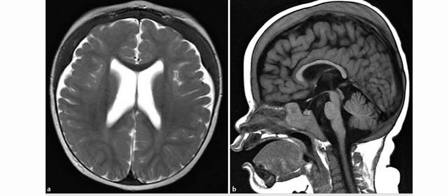Considering this key finding of diffuse calvarial thickening in a child, the diagnosis of chronic anemia should be made. Differentials include chronic anemias, hemoglobinopathies, bony dysplasias like fibrous dysplasia, phenytoin therapy, hyperparathyroidism, and chronic shunted hydrocephalus. This is a diagnosed case of chronic anemia; chronic anemia and hemoglobinopathies typically result in enlargement of the diploic space and decreased marrow signal.